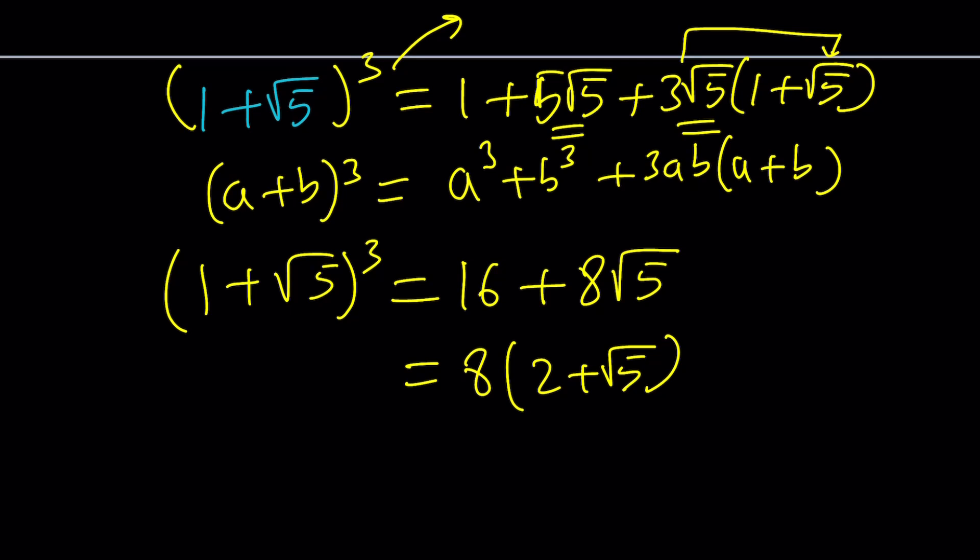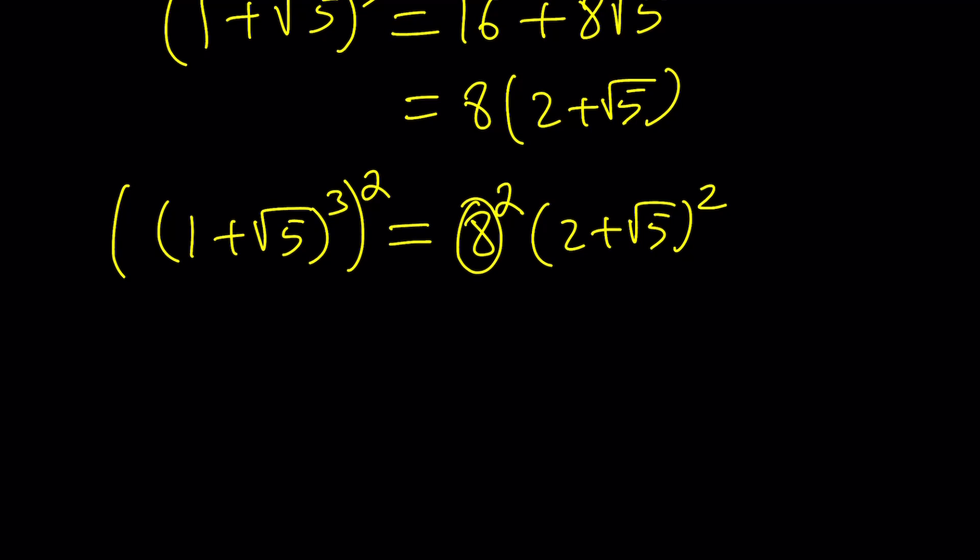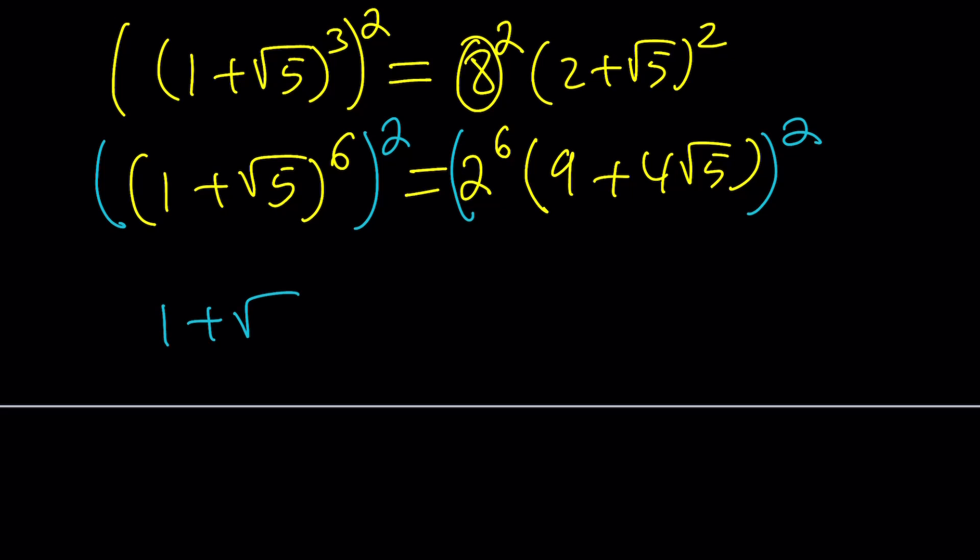This is just a cube. So let's go ahead and square this. If you square 1 plus root 5 to the third power, you're going to get the sixth power. So it's going to be 8 to the second and 2 plus root 5 to the second. But this is going to be 2 to the third. So let's write it as 2 to the sixth power because that's going to be more helpful. 4 plus 5 is 9 plus 4 root 5.